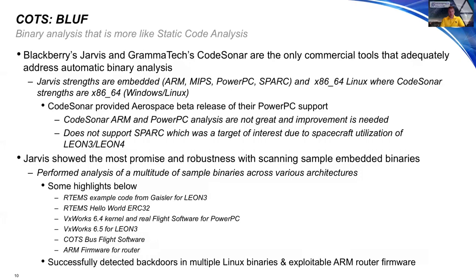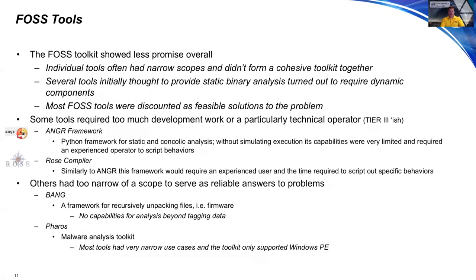Jarvis showed the most promise. We scanned many different types of binaries compiled from various compilers — RTEMS, VxWorks, hot software for a bus, a new bus architecture, firmware from a router. We were successful in detecting some backdoors in Linux binaries — when we tested unknowns with Linux, we found backdoors — and found a buffer overflow exploit in an ARM router firmware. The FOSS tools showed less promise; they're built for single purposes and not commercialized, so there are niche areas where they come in handy.